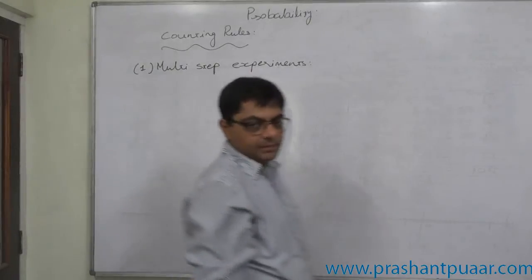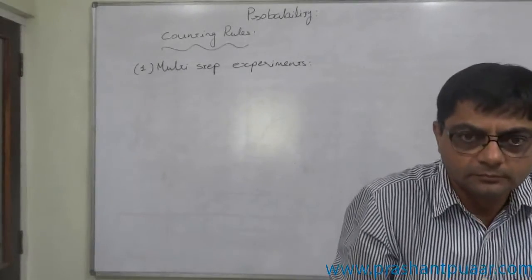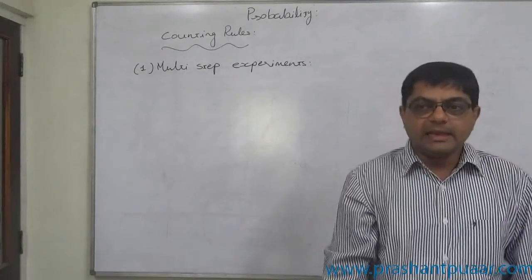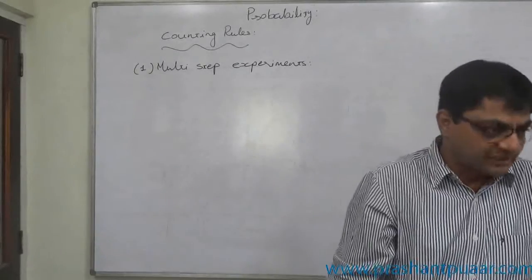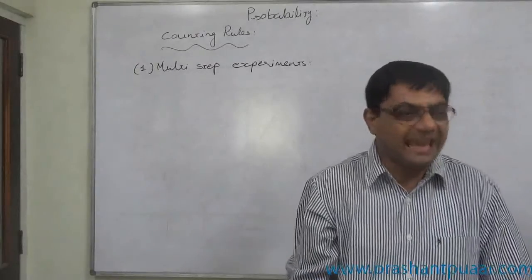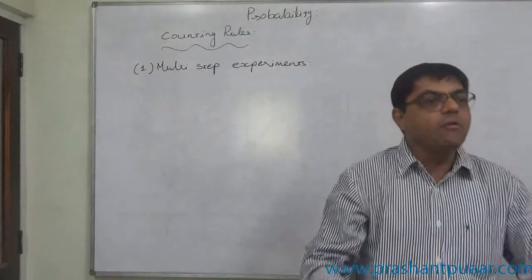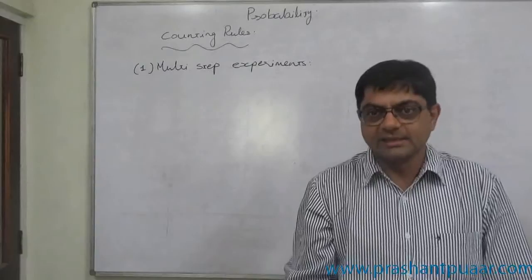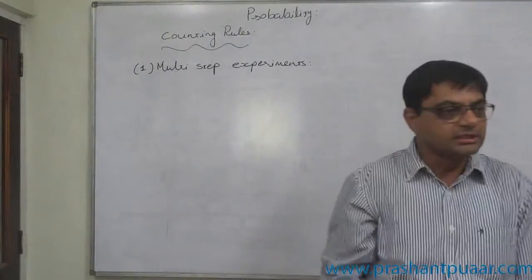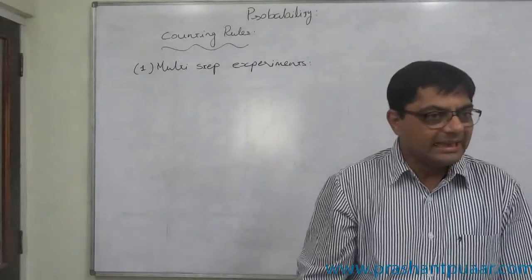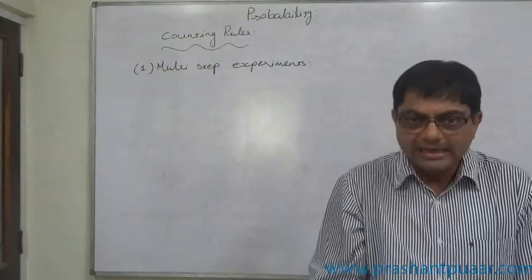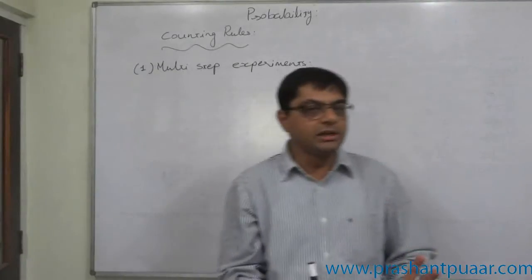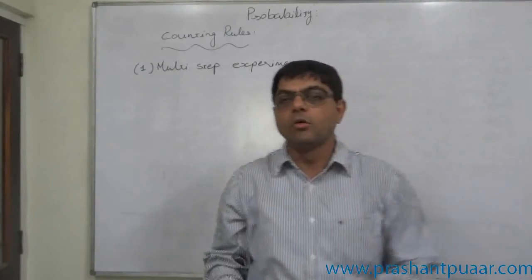What is a multi-step experiment? When any experiment can be performed in k number of steps, suppose the number of steps is k, and n1 outcomes are possible in the first step, n2 in the second step, n3 in the third step, and so on up to nk outcomes in the kth step — then the total number of possible outcomes is the multiplication of all possible outcomes across all steps.